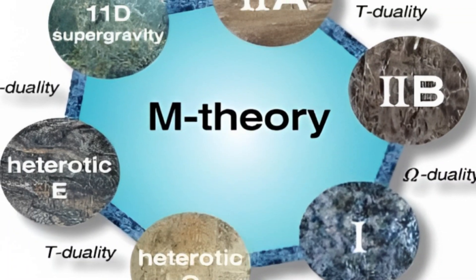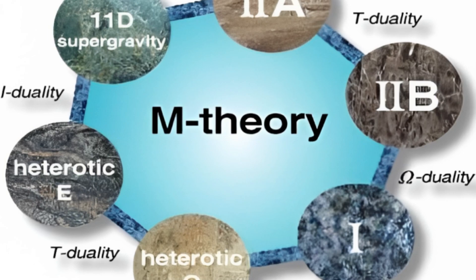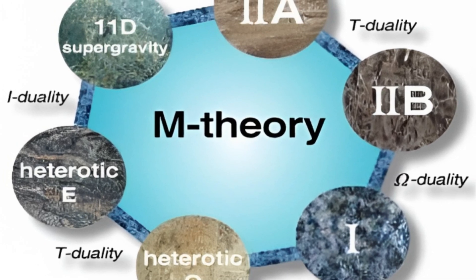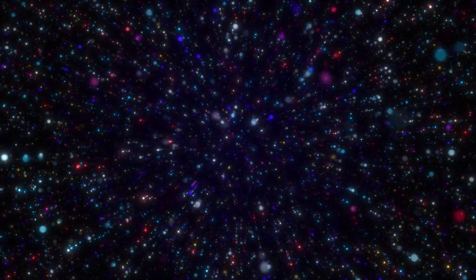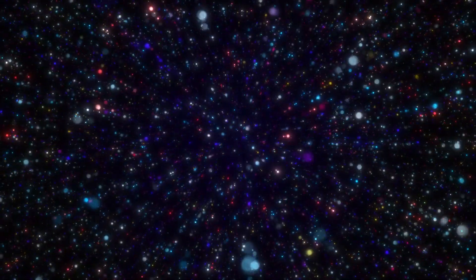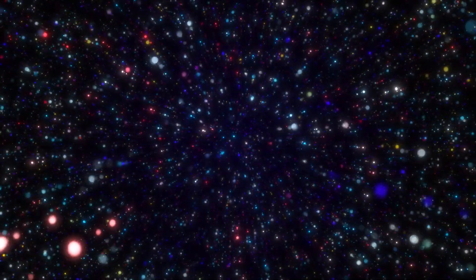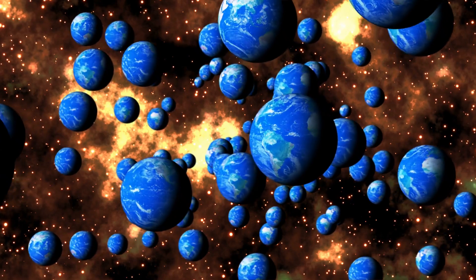Next, we have M-theory, a theory that unifies all consistent versions of superstring theory. The M in M-theory can stand for magic, mystery, or membrane, depending on who you ask. In the context of multiverses, M-theory introduces the concept of a brane, which is a multidimensional object.